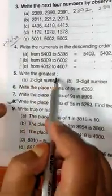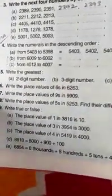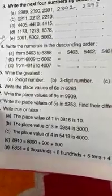Question number 5 is write the greatest two digit number. Already I have told you what is the greatest two digit number. Greatest two digit number is 99. Like this greatest three digit number you write. Greatest four digit number you write.